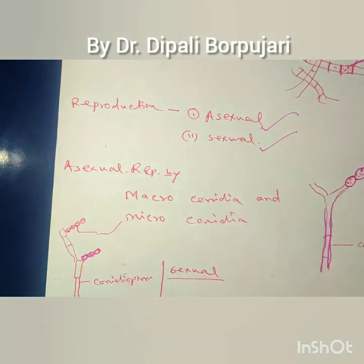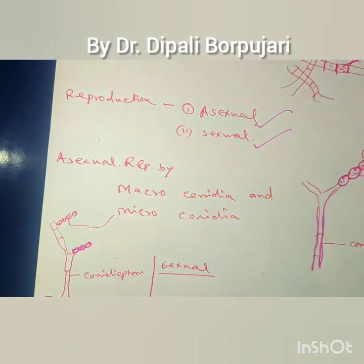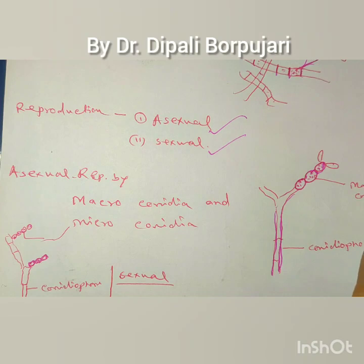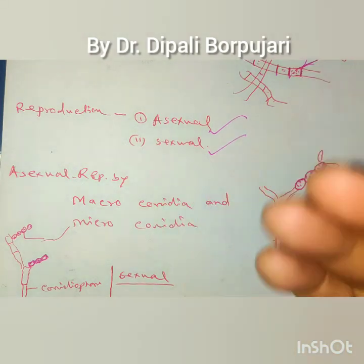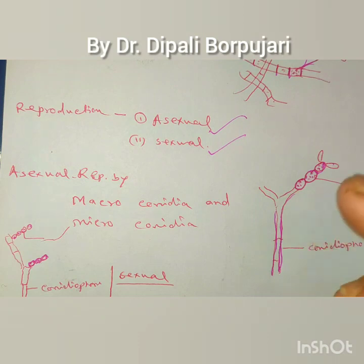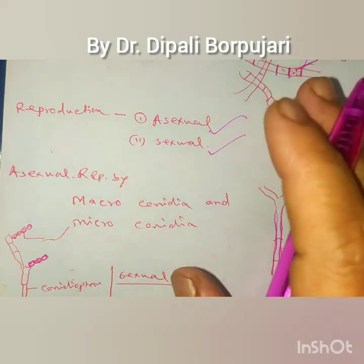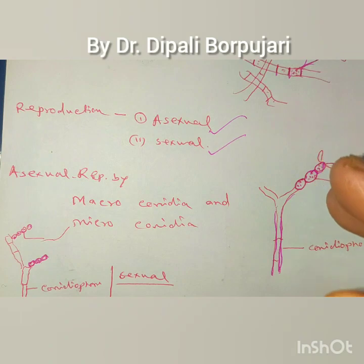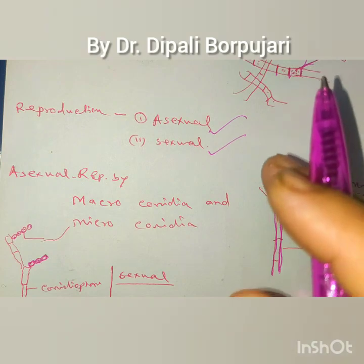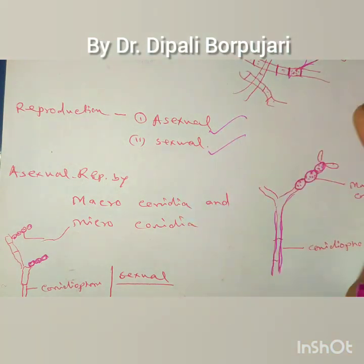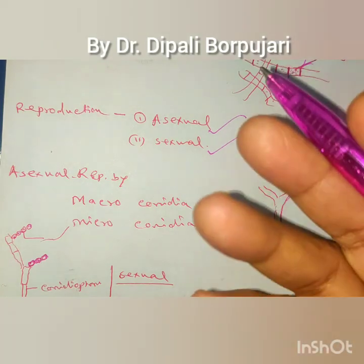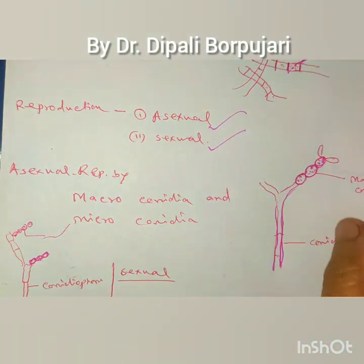The next is sexual reproduction. Sexual reproduction may be homothelic or heterothelic. Homothelic means when both the sex organs — that is, the male and female sex organs — are borne on the same thallus. Heterothelic means they are borne on separate thalli.